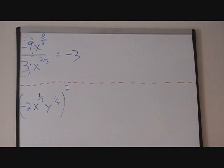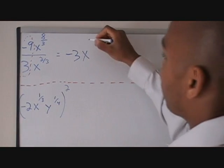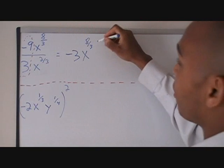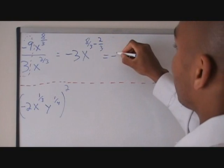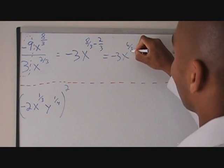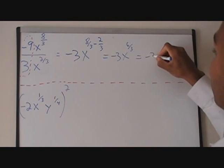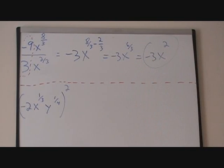Now, the properties of exponents say when I have division with the same base — our base is x — I can subtract the exponents. So, this becomes x, we write our base, and we subtract the exponents from top to bottom. So, we have 8 thirds minus 2 thirds, which becomes 6 over 3. The 6 over 3 can be reduced to become 2. So, our final answer is negative 3x squared.